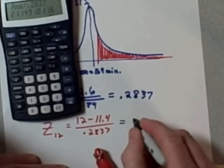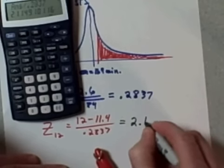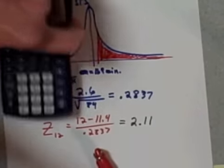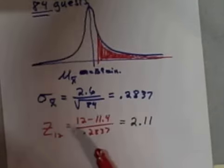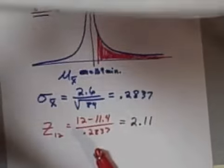This is a z-score of 2.11. If I look up 2.11—that is positive, so look at my positive z-score table—you should be looking this up along with me. 2.11 is an equivalent percent, or decimal, of 0.9826.